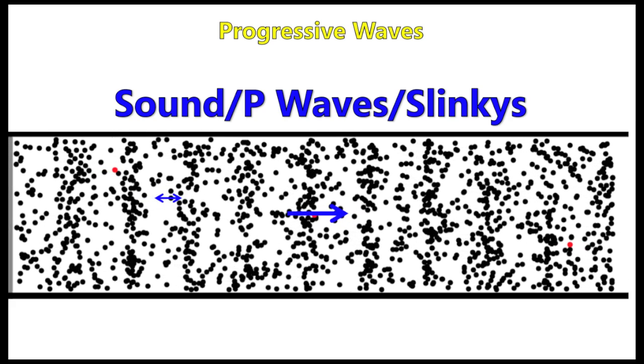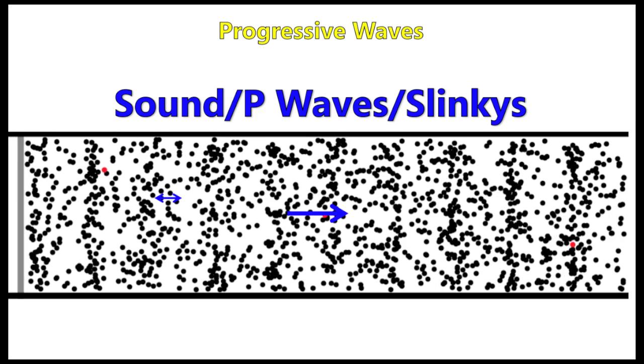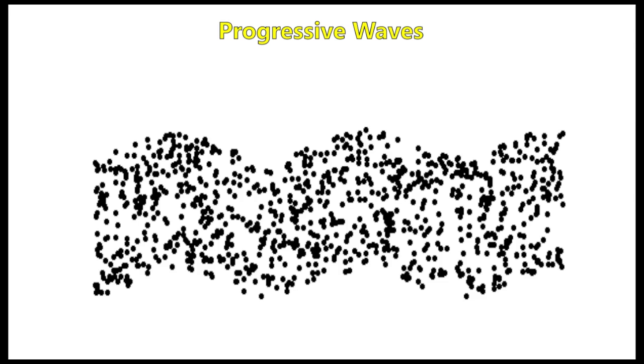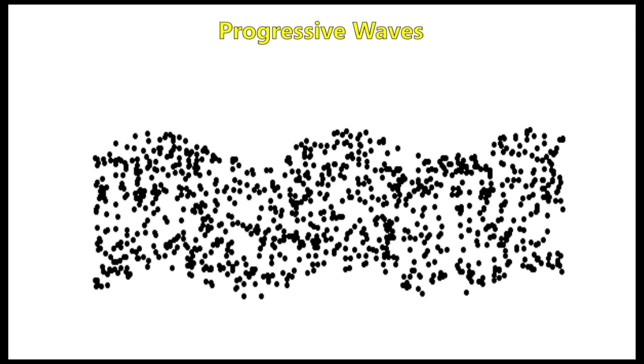Transverse waves are waves in which the direction of the vibration is perpendicular to the direction in which the wave travels. Examples are electromagnetic waves, secondary seismic waves, and waves on a string.